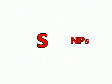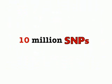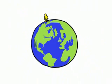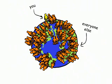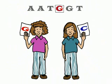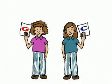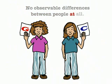There are around 10 million SNPs in the human genome, which account for many of the genetic differences between you and everyone else on the planet. Some SNPs account for differences in appearance. Others can affect how we develop diseases or respond to drugs. Most SNPs, however, seem to lead to no observable differences between people at all.